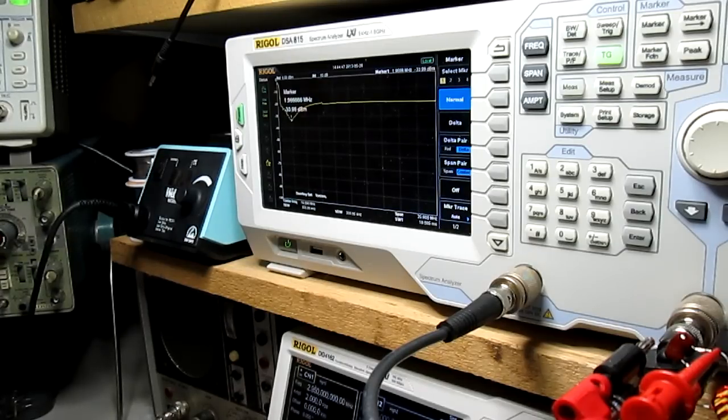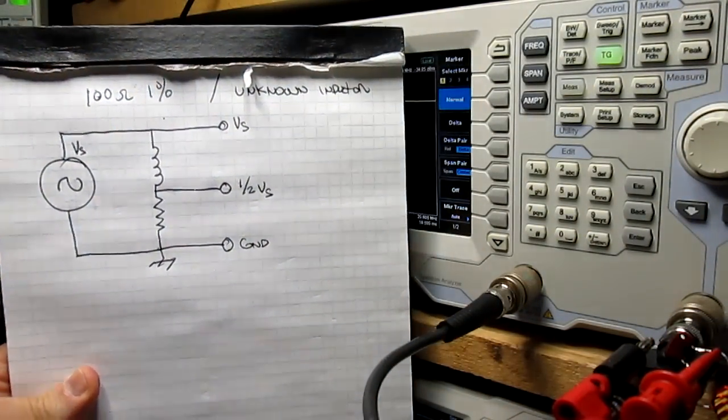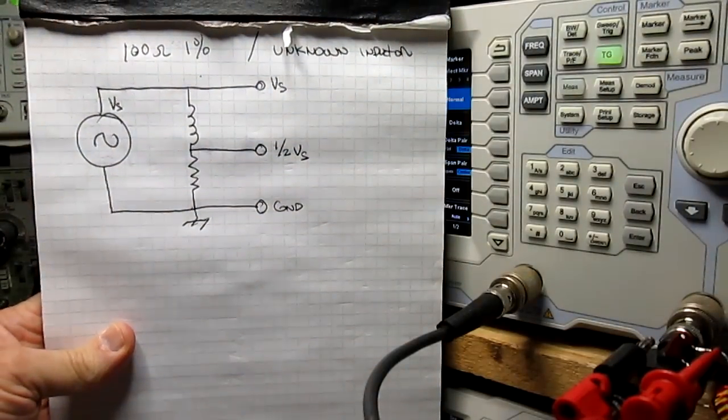There were a couple of articles I saw online for doing that, one of which was from daycounter.com. Basically, what they're saying is you take and put a 100 ohm resistor in series with an inductor, excite that with a signal from a function generator sine wave, and work your way up in frequency until the voltage drop across the resistor is half of what the source voltage is being applied to the circuit.